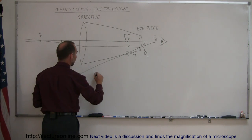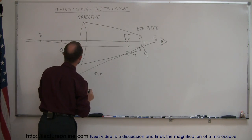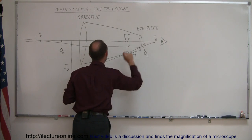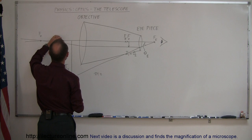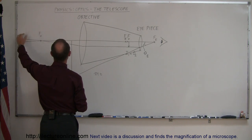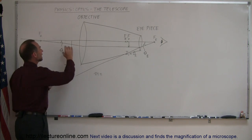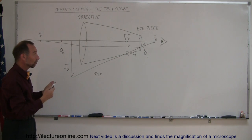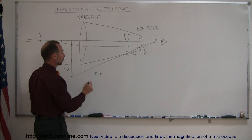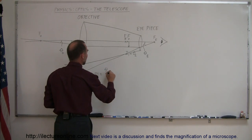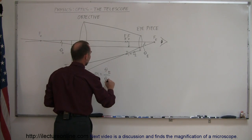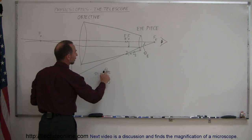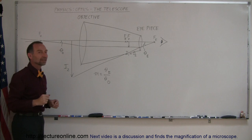The magnification of this telescope is simply the ratio of the angle formed by the image of the second lens divided by the angle formed by the object coming into the first lens. This would be the angular size of the object and this would be the angular size of the second image — the image the observer looks at. So this is equal to theta sub e divided by theta sub o.